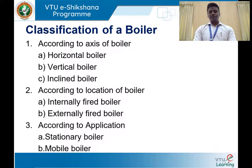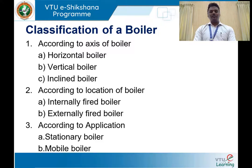Coming to classification of boilers — boilers are categorized based on a number of factors. The first factor is based on the position of the boiler. If the boiler shell axis is horizontal to the ground surface, it is known as a horizontal boiler. If the axis is vertical, it is a vertical boiler. In an inclined boiler, the boiler shell is inclined at some angle with respect to the ground surface.